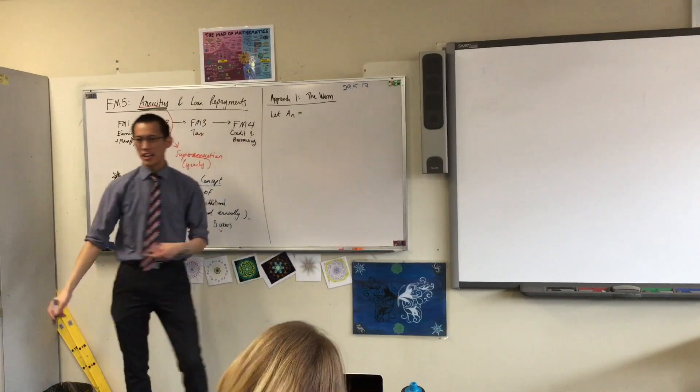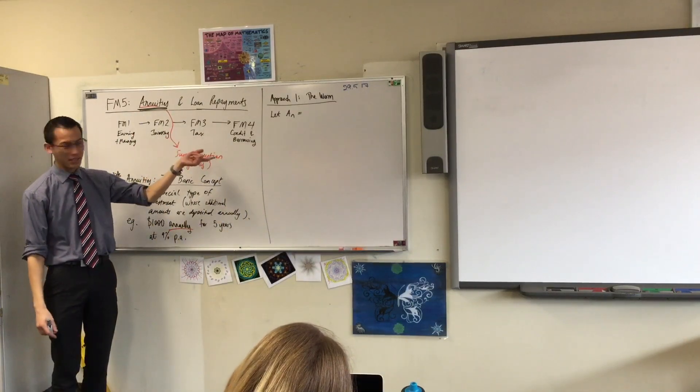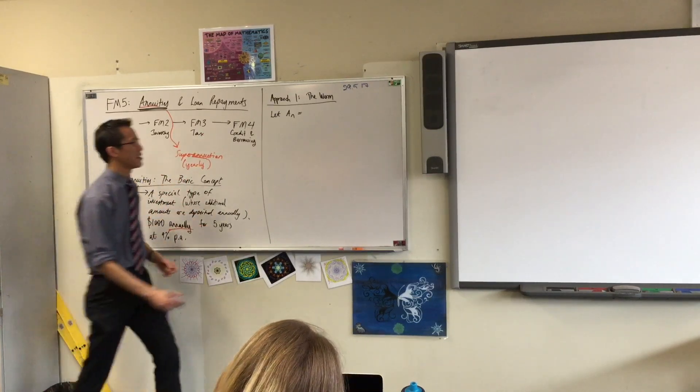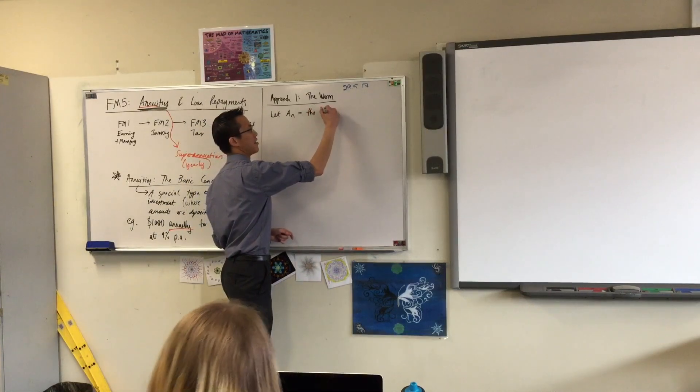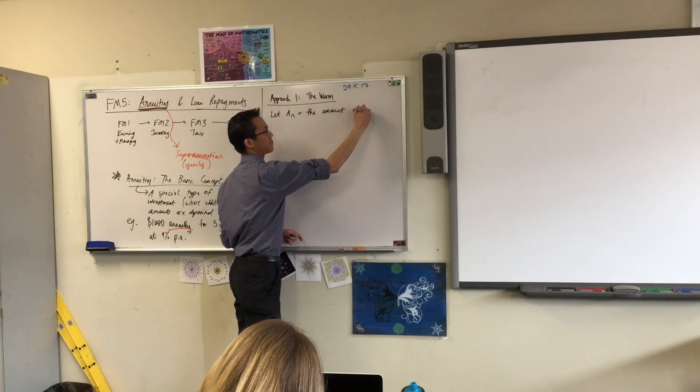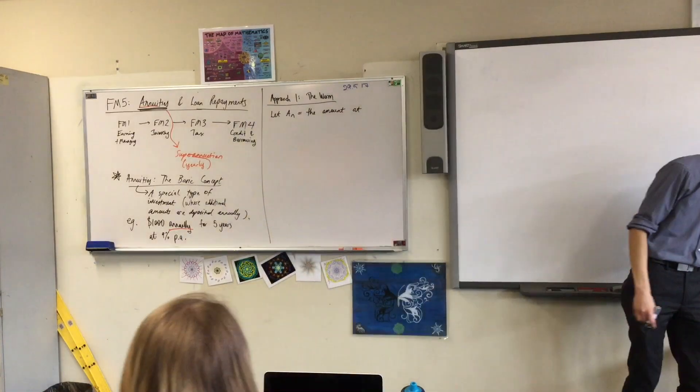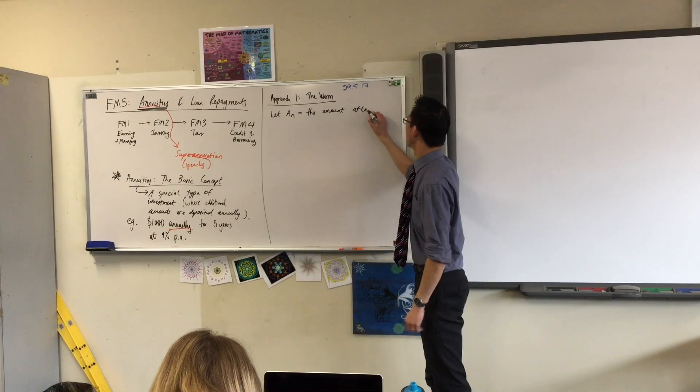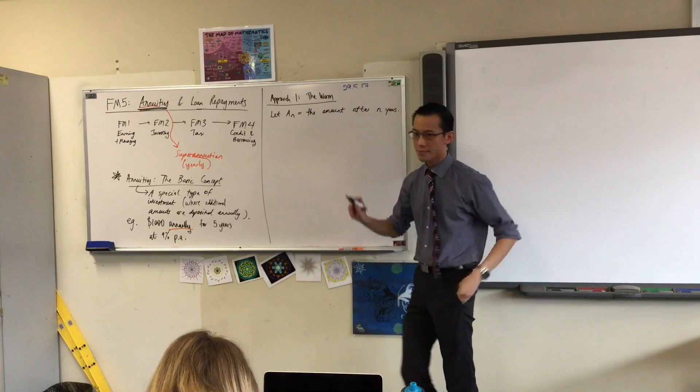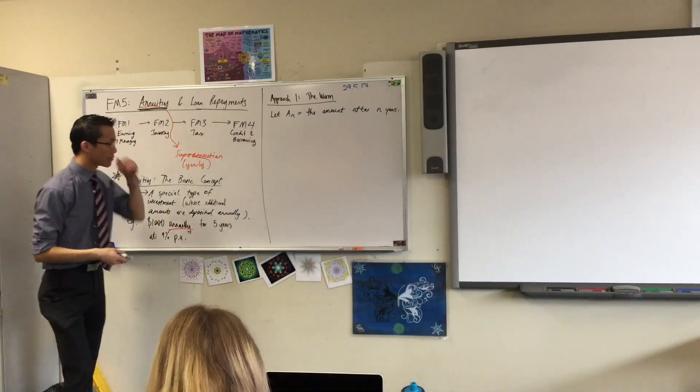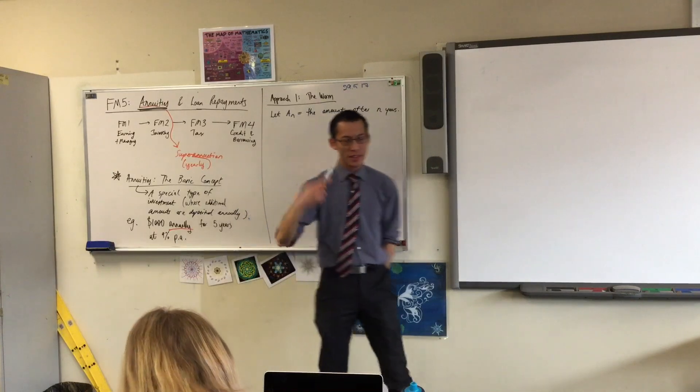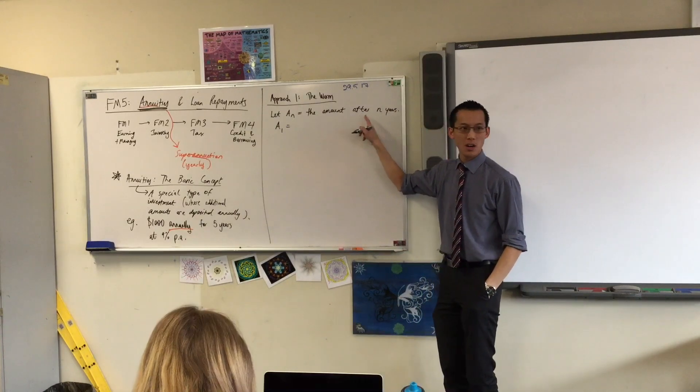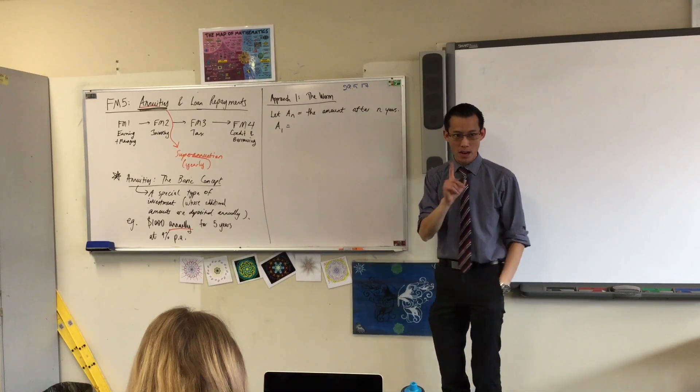Let A N, I'm going to introduce this notation. A stands for amount, and N stands for the number of years that you've had your investment in there. So let A N equal the amount after N years. So A1 will be the amount after one year. Does that make sense?